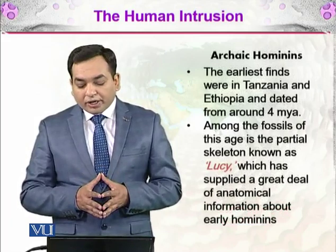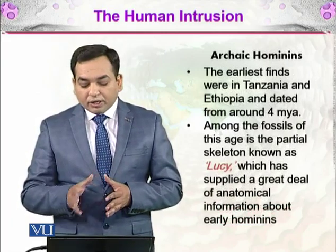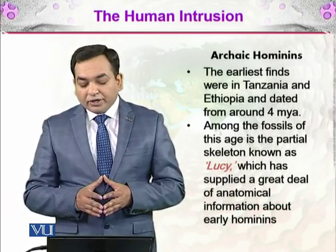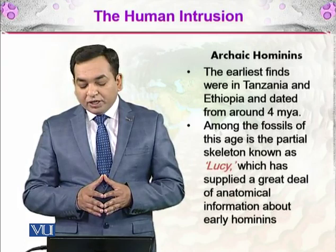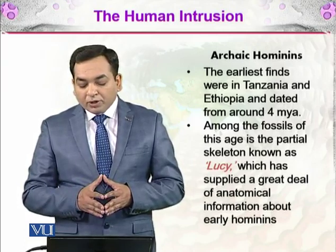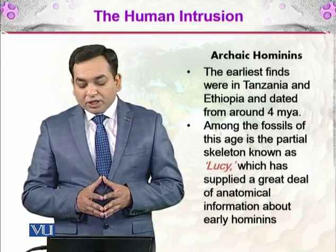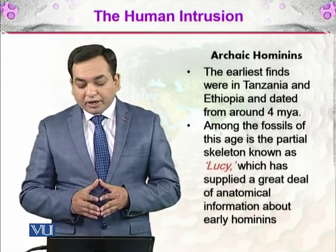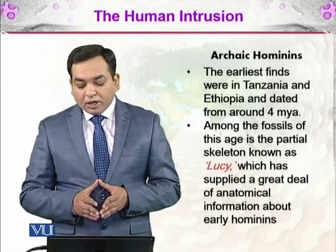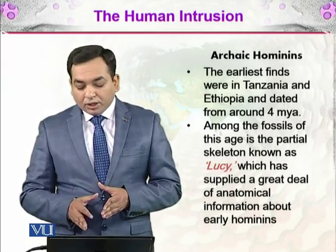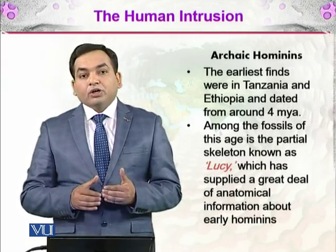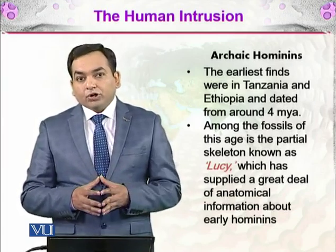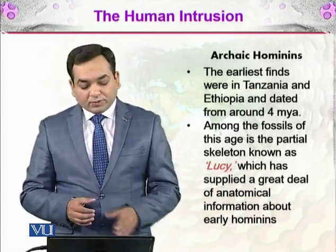Among the archaic hominins, early finds in Tanzania and Ethiopia were dated to around 4 million years ago. Among the fossils of this age is the partial skeleton known as Lucy, which has supplied a great deal of anatomical information about the early hominins. We have also discussed Lucy in the paleontological section.